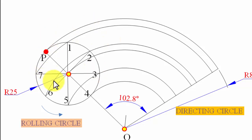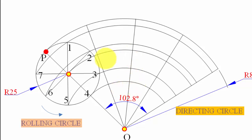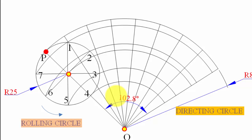The 102.8-degree arc needs to be divided into eight equal parts. Start by bisecting 102.8 into two, then bisect each half to get four parts, then bisect each of those four angles individually to get eight equal parts. If you're unsure how to do this, refer back to the previous epicycloid video where this process is explained in detail. This gives us positions C0 through C8 — all the center points.